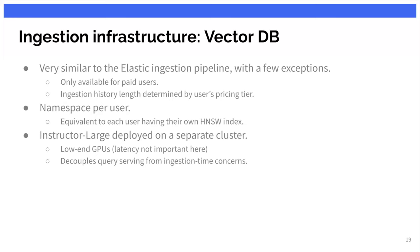The only two exceptions for vector search are: it's gated by payment plan so it's only available for paid users, and we tie the history length of vector ingestion to the user's payment tier. We also namespace vectors by user — a key requirement from day one. Many vector databases use an index type called HNSW (Hierarchical Navigable Small World) under the hood, and I believe Elasticsearch's newer versions do the same. It's very impressive technology that makes vector search fast and efficient, but one unfortunate consequence is that performance and search quality degrade when the index grows very large. So we really need to partition by user and keep indexes manageably small. We use the Instructor model for ingestion workloads, running it on a separate cluster with low-end GPUs since it's background work and not user-visible latency.